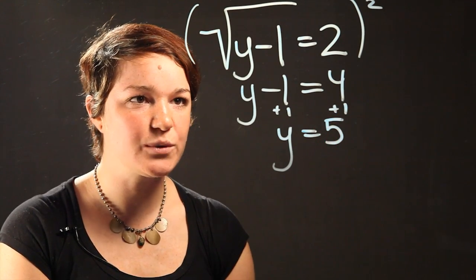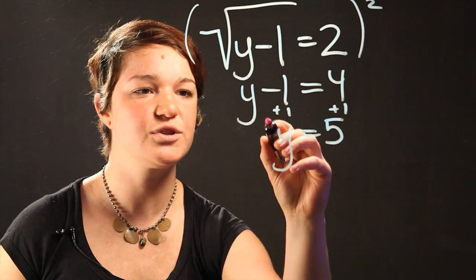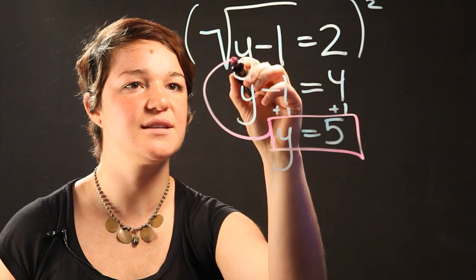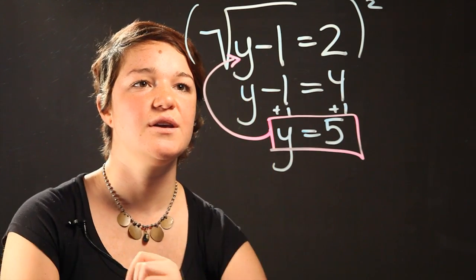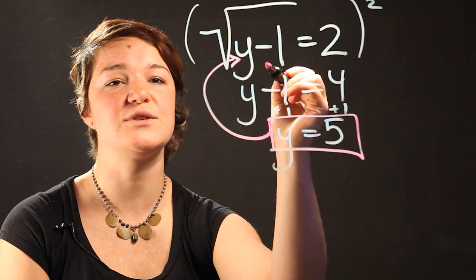The way that you would check it is you take the answer, which is y equals 5, and plug it back into the original equation. So you're going to take 5 and substitute it back in for y.